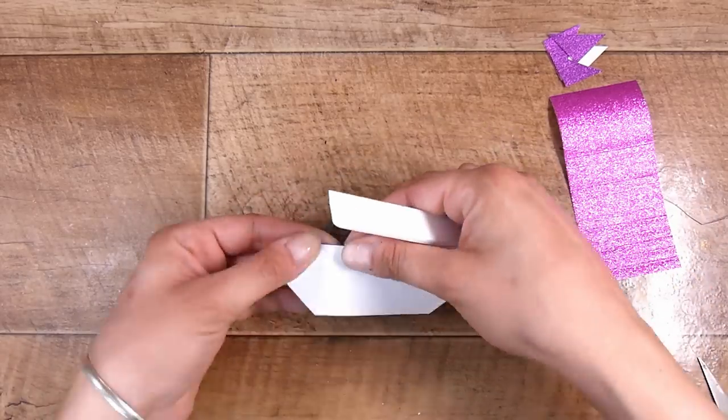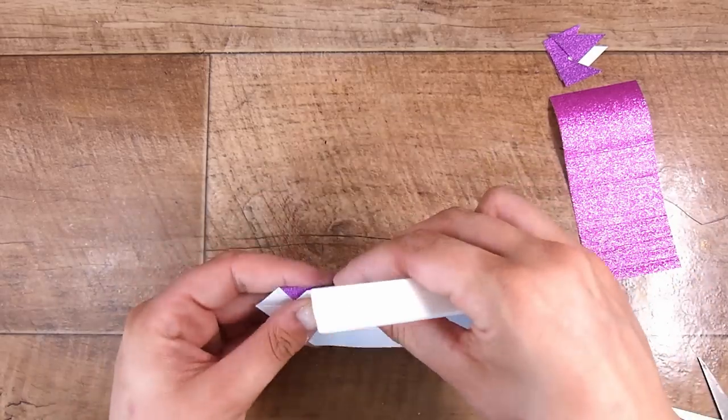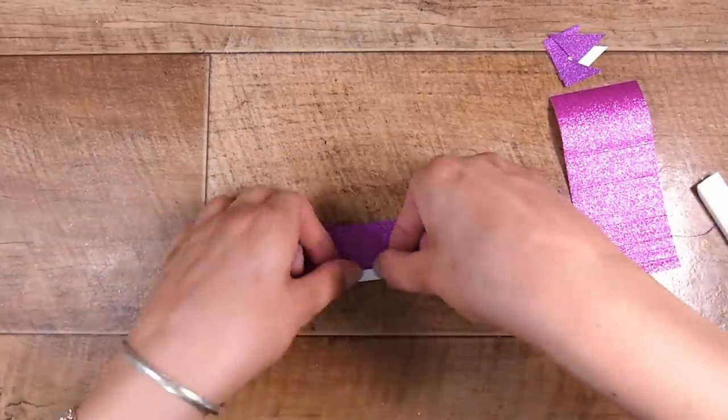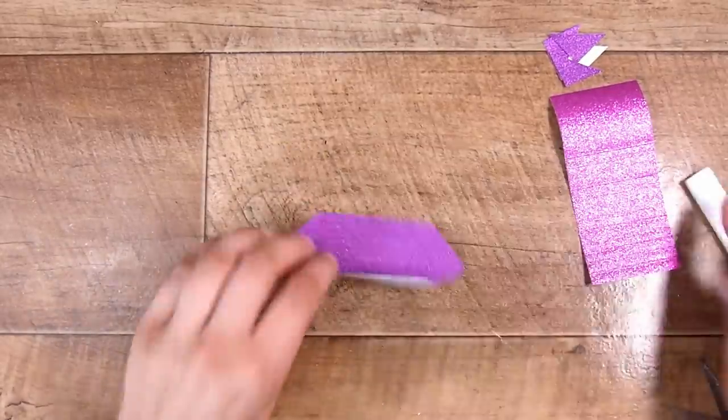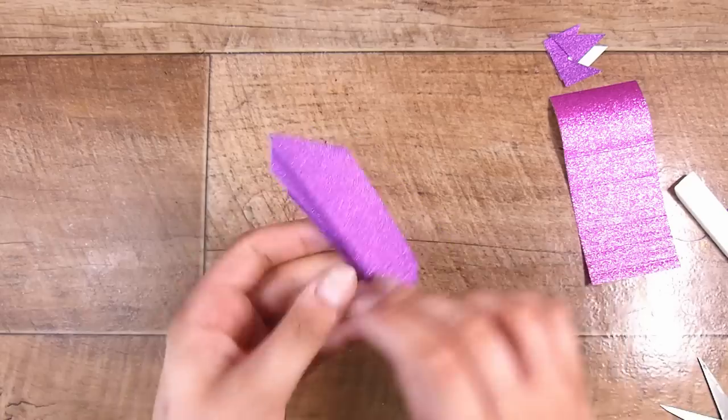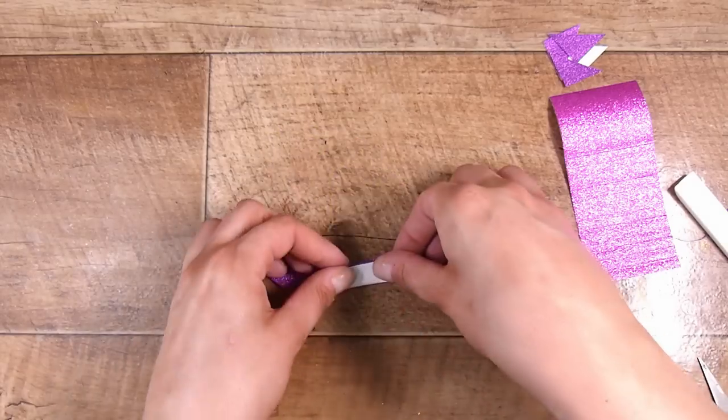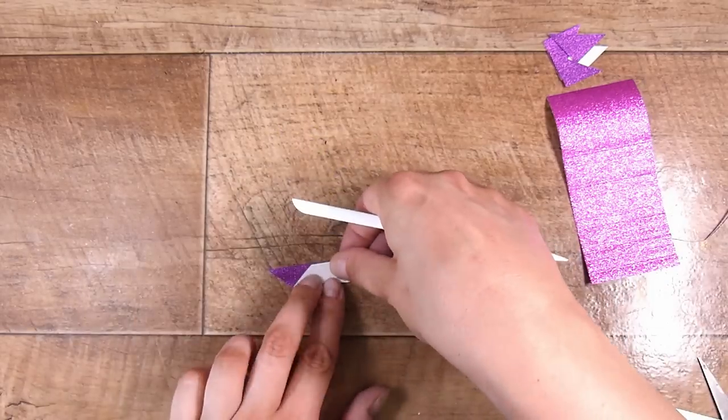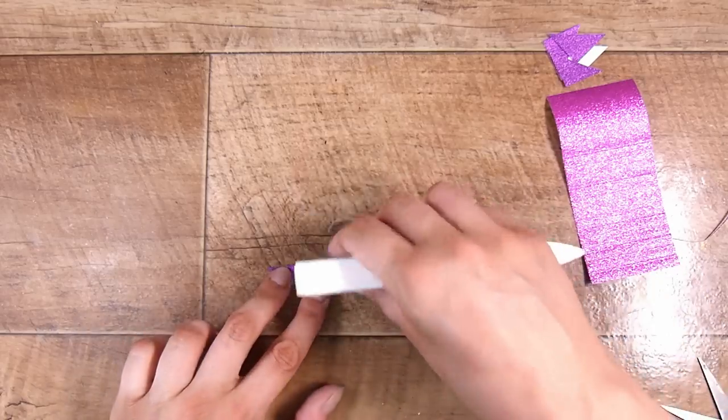I am just trying to make sure that all of my folds are kind of nice and sharp, so I'm using my bone folder to go back and make sure that these are all relatively crisp. I just go back and forward, back and forward, and then you can see that you end up with that whole piece done.